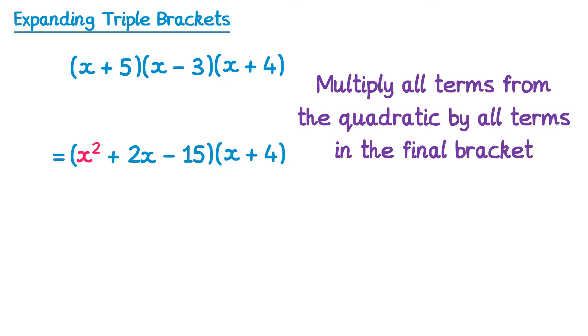We'll begin with the x squared here and multiply it by both terms in the final bracket. So first of all x squared times x, which gives x cubed. Then we'll do x squared times 4, so plus 4x squared.